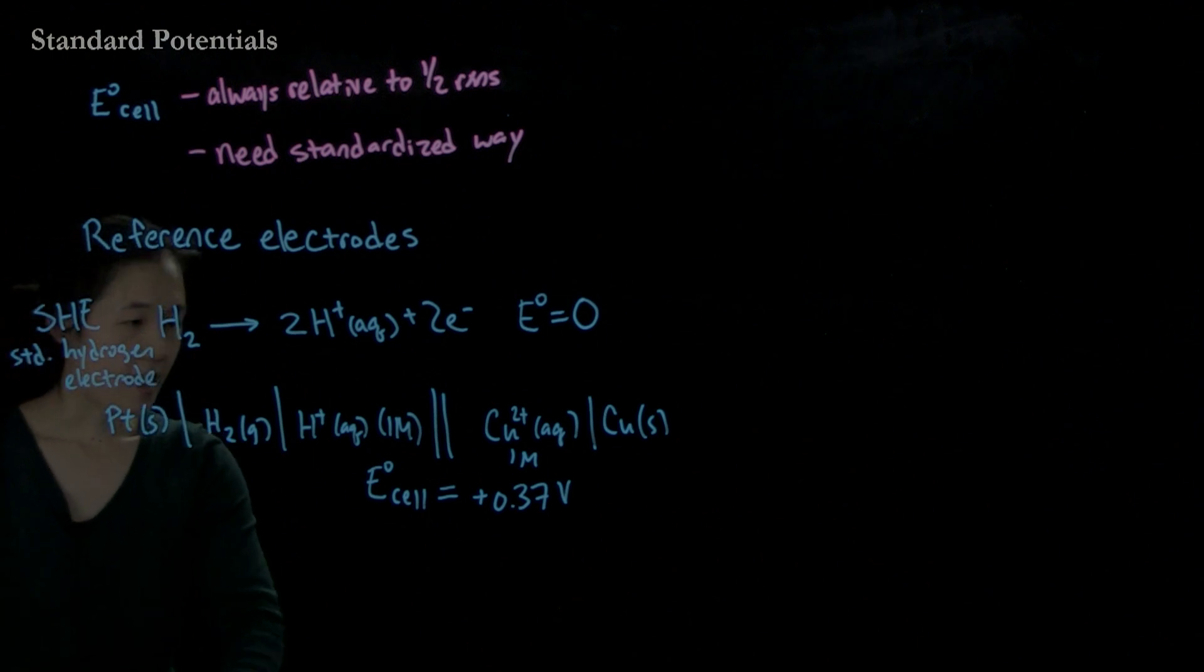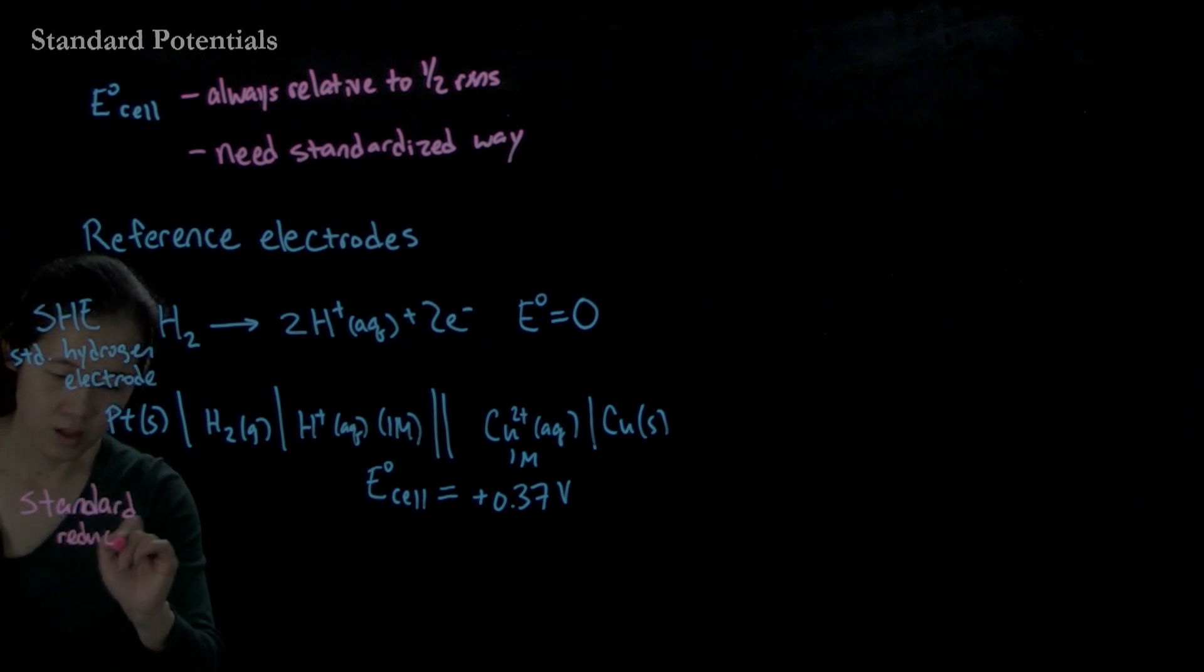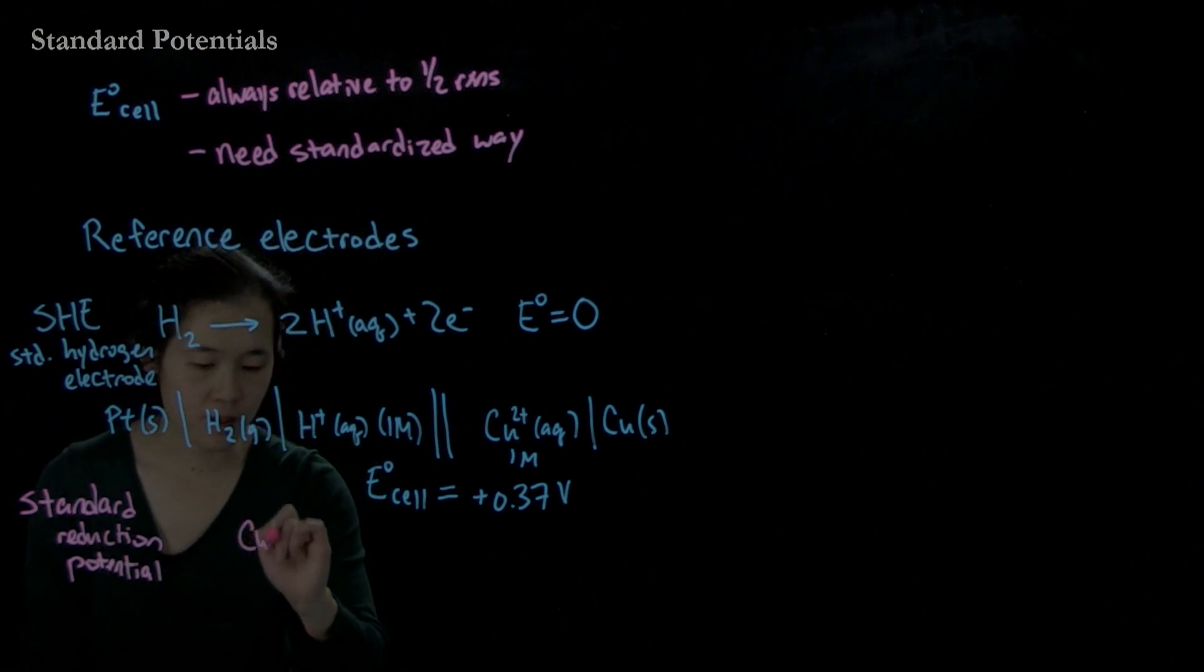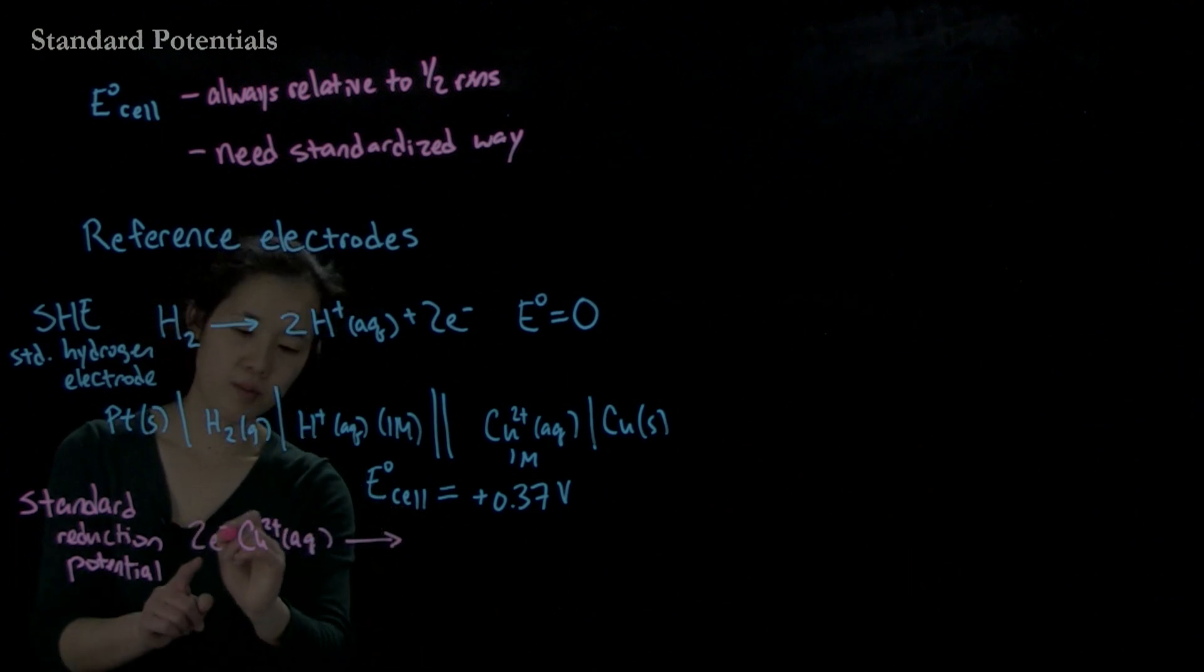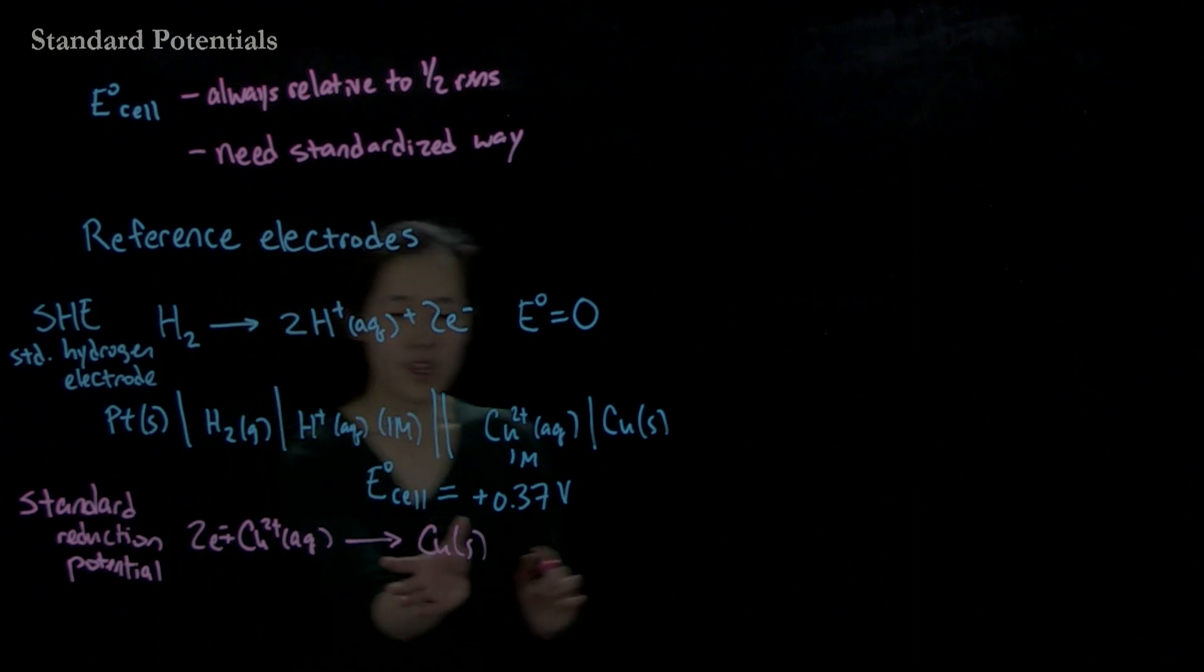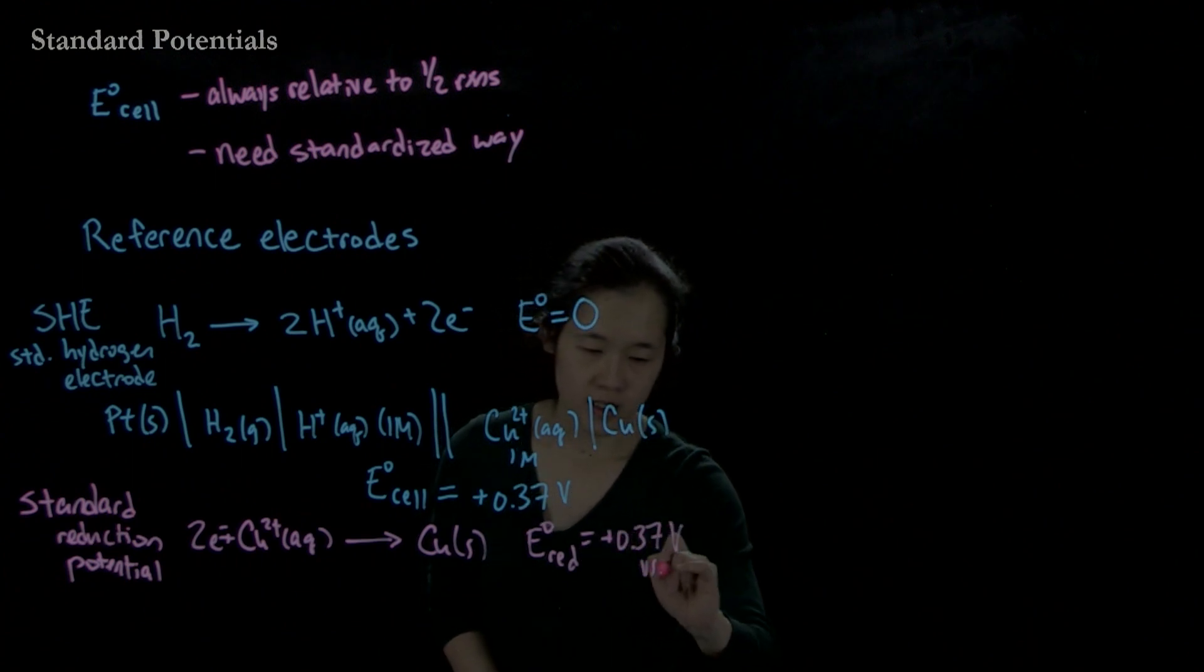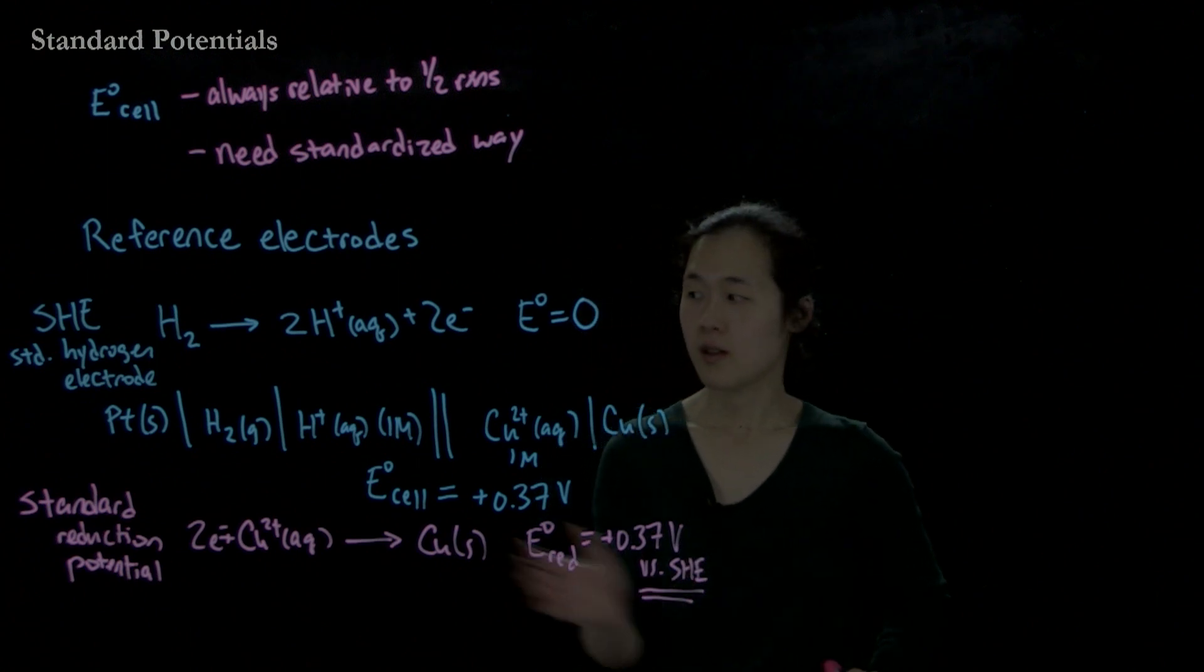We can then define our standard reduction potential of a half reaction. So if we want to know the reduction potential of going from copper two plus aqueous adding two electrons - this is a reduction because copper is getting reduced by two electrons - going to copper solid, then we can say that our standard reduction potential is going to be equal to plus 0.37 volts versus SHE. Here I'm specifying what reference electrode I used because this was our reference.